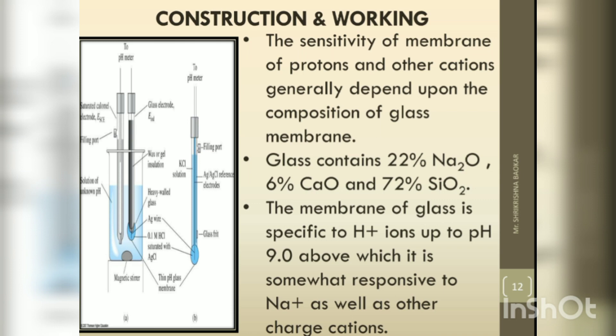Glass contains 22% of Na2O (sodium oxide), 6% CaO (calcium oxide), and 72% of SiO2 (silicon dioxide). The membrane of glass is specific to H+ ions up to pH 9, above which it becomes somewhat responsive to Na+ as well as other charged cations.